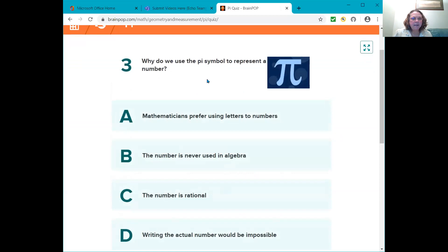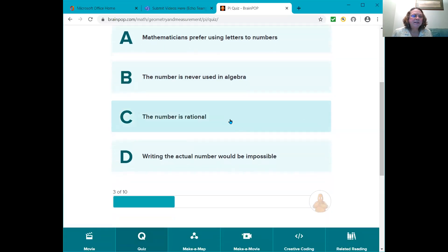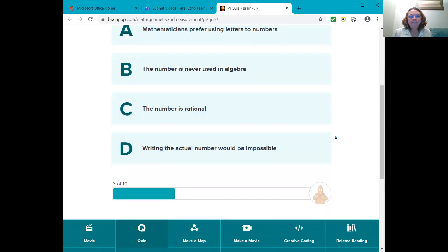Question three. Why do we use the Pi symbol to represent a number? Is it A, mathematicians prefer using letters to numbers? Or is it B, the number is never used in algebra? Or C, the number is rational? Or D, writing the actual number would be impossible? Tim told us that. It's D.